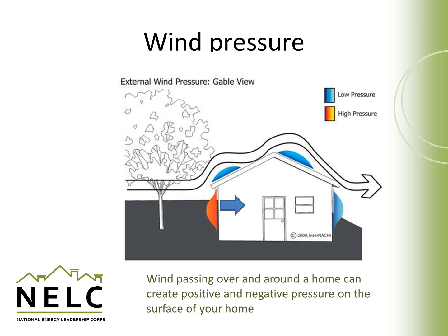The blue spots indicate places where wind would create low pressure, and this low pressure could end up sucking air out of the house and contribute to an overall reduction in our energy performance of the house.